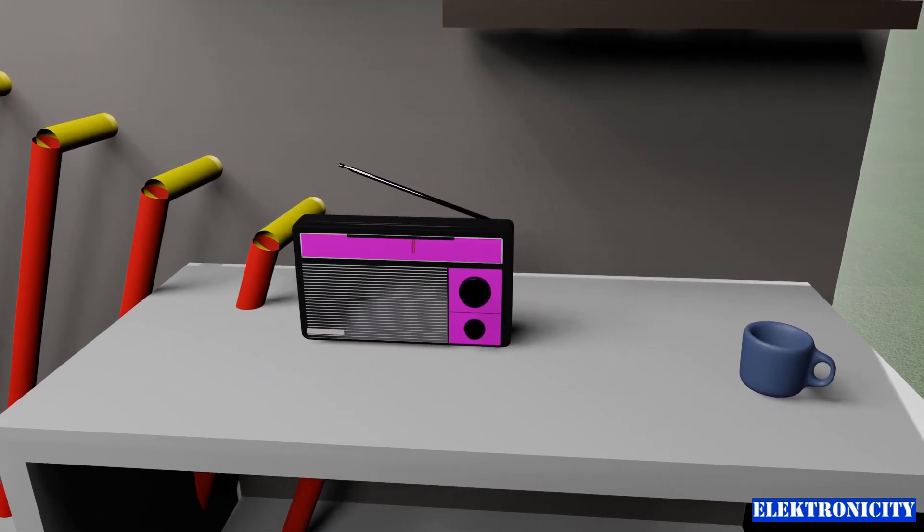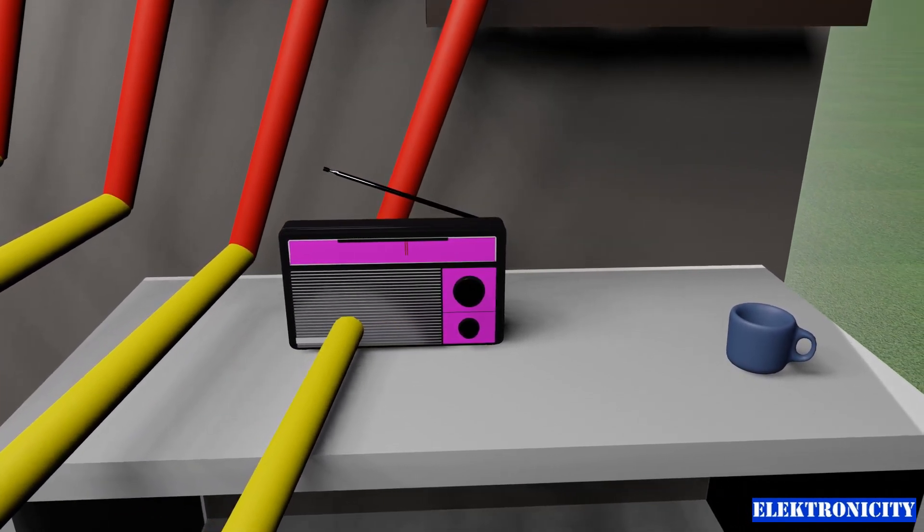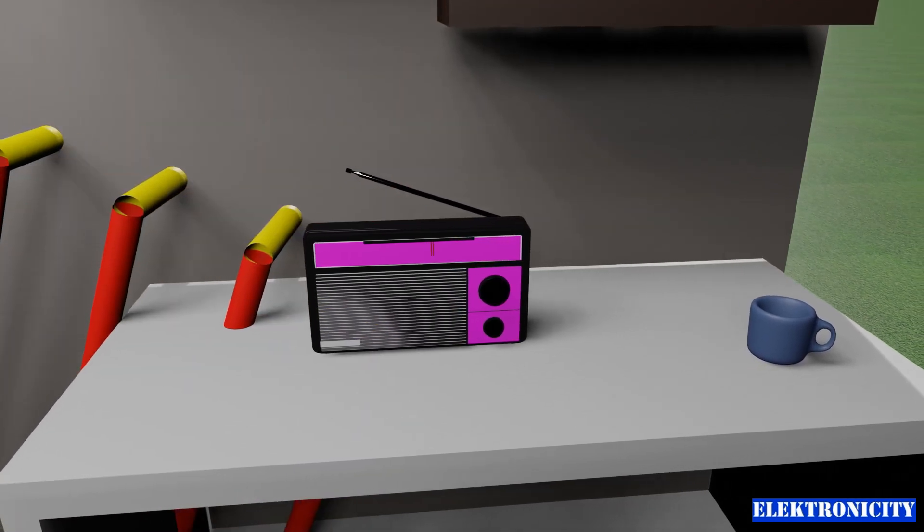Inside the AM radio receiver, the antenna picks up the desired signal, processes it, and then converts it back to audio signal using built-in speakers.